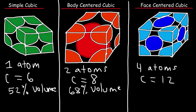The face centered cubic structure is the most efficient cubic structure. The percent by volume is 74%, so the atoms are arranged in such a way that they take up the most space, maximizing the use of the volume of the cube. Only 26% is empty space, which is why it's also known as cubic closest packing.